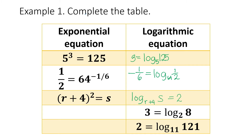Now, from logarithmic form to exponential form. The given is 3 equals logarithm of 8 to the base 2. So, 2 is the base, and the exponent is the value of the logarithm, which is 3. So, 2 cubed equals 8. And that is true — 2 cubed is equal to 8.